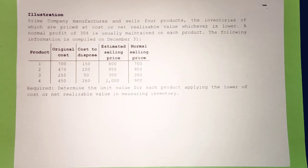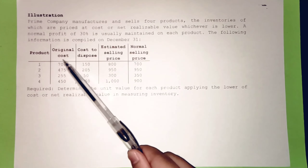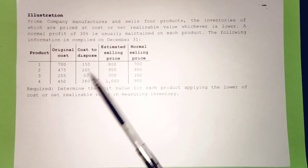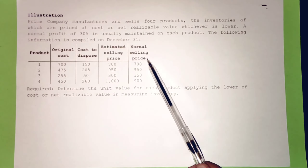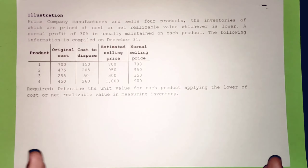This is a basic LCNRV illustration. We will determine cost and net realizable value based on the given data. There are four products, with original cost, cost to dispose, estimated selling price, and normal selling price given. When determining LCNRV for multiple products, NRV is determined on an individual or item-by-item basis.